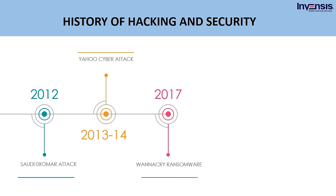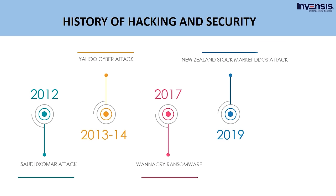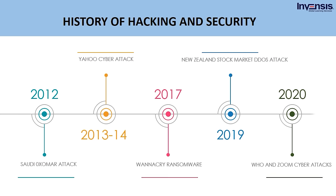In 2017, there was a ransomware attack called the WannaCry attack — we will discuss this in detail in the coming sessions. In 2019, there was a DDoS attack conducted on the New Zealand stock exchange market, causing it to completely shut down for four days after the systems crashed. In 2020, 450 active WHO staff email addresses and passwords were leaked online along with thousands belonging to others working on the novel coronavirus response. In the same year, over 500,000 Zoom accounts were compromised and sold on the dark web for less than a penny each, and in some cases given away for free — shared so that hackers could use them in Zoom bombing pranks and malicious activities.